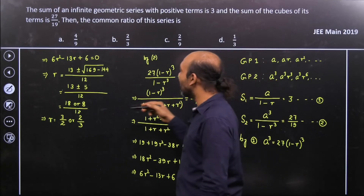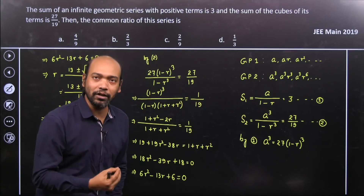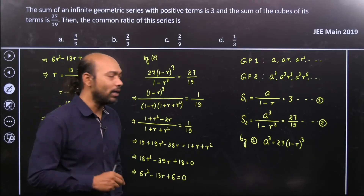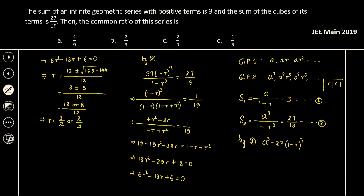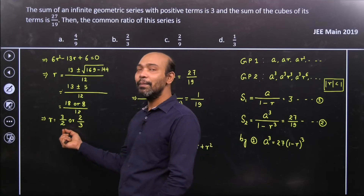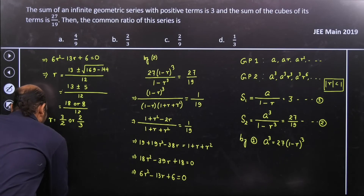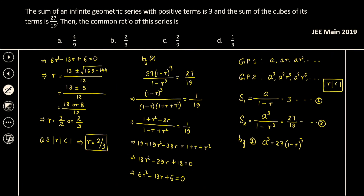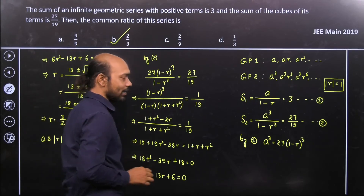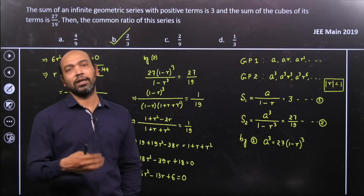Since this is an infinite GP series, it must be convergent, and the condition for convergence is that |R| < 1. Since 3/2 is greater than 1, it is rejected. Therefore the required value of R is 2/3, and option B is the correct answer. Apply the infinite GP series formula, do the elimination, and the job is done.